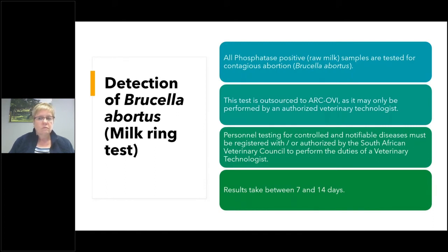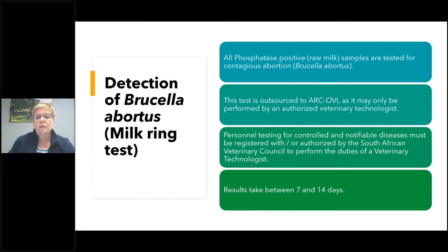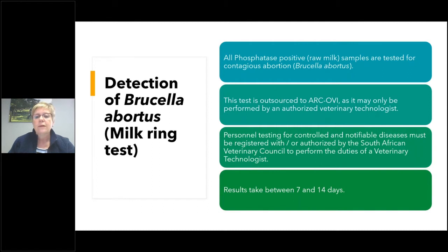All phosphatase-positive tests — which in effect indicate raw milk samples — are then tested for contagious abortion, caused by the bacteria Brucella. The test used to detect this is the milk ring test, also called the MRT test. This test is outsourced to the ARC, the Agricultural Research Council, at the Onderstepoort Veterinary Institute, as it may only be performed by an authorized veterinary technologist. The result takes about 7 to 14 days.